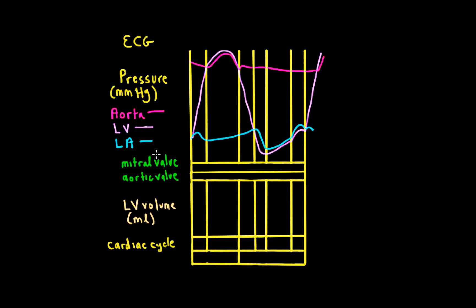Now let's figure out the valves and what they're doing. That's pretty straightforward if we know our principles of valve action. We see that there's a period of time where the ventricle pressure is greater than the atrial pressure, and we know that means the AV valves should be closed. So the mitral valve is going to be closed because the pressure in the left ventricle is greater than the left atrium. During the rest of the cardiac cycle, the mitral valve is going to be open because the left atrial pressure is greater than the left ventricle pressure.